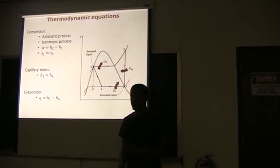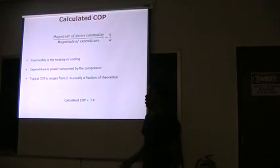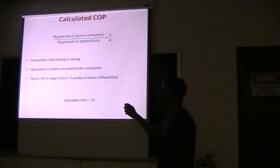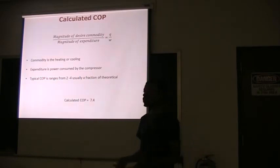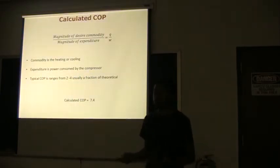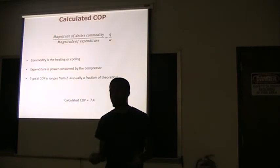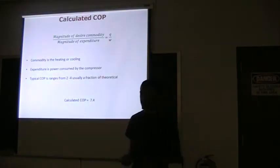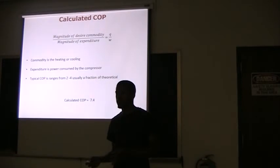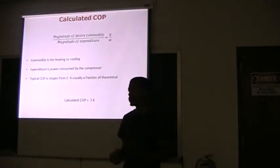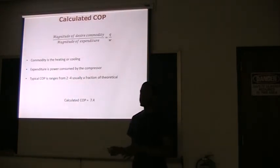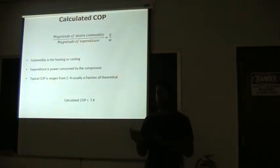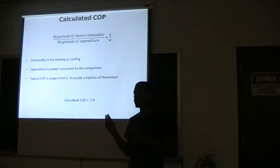Those equations are used to calculate COP, which is the performance of the air conditioner. It is denoted by the magnitude of the desired quantity, which is your Q, over the magnitude of the expenditure, which is your work. And typically, COP for air conditioner ranges from two to four.